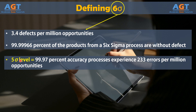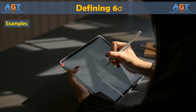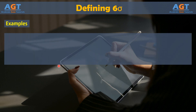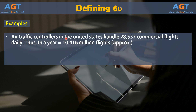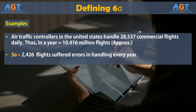Now let's look at some real-world examples that would make it more clear. According to the National Oceanic and Atmospheric Administration, air traffic controllers in the United States handle 28,537 commercial flights daily. In a year, that is approximately 10.416 million flights. Based on a Five Sigma air traffic control process,